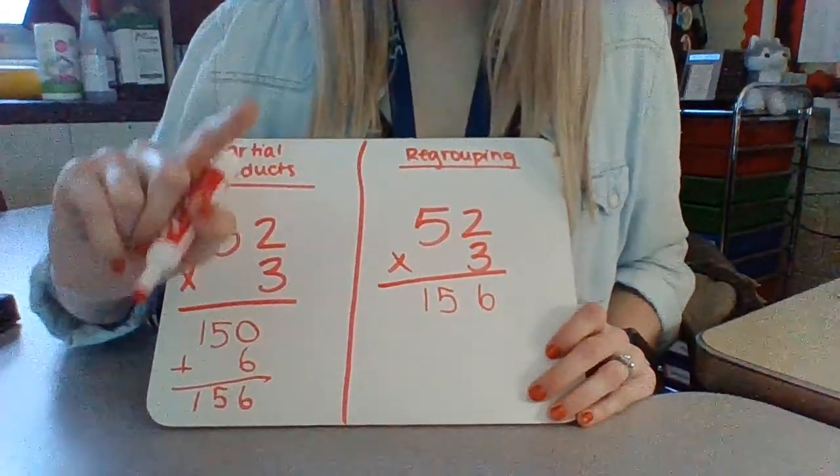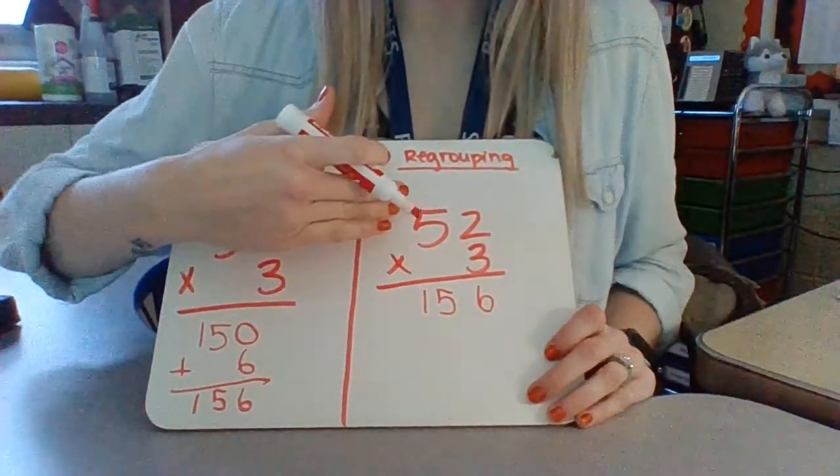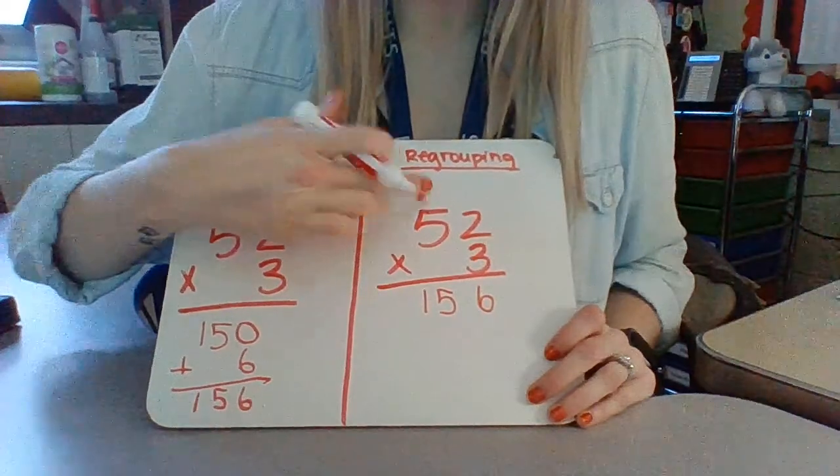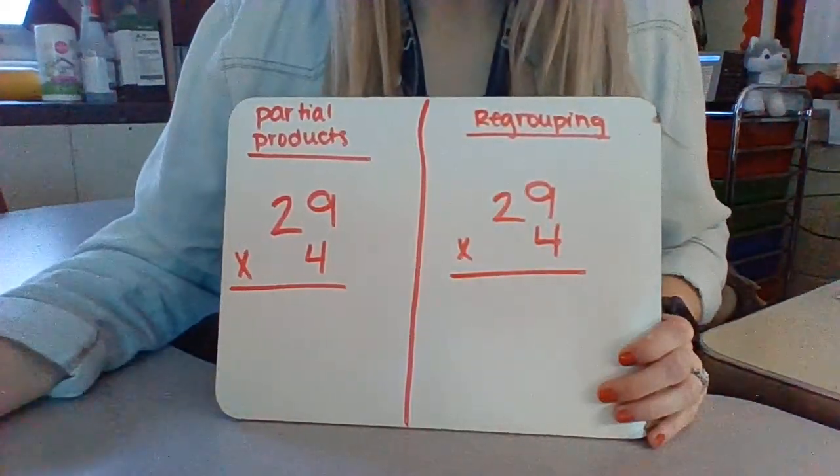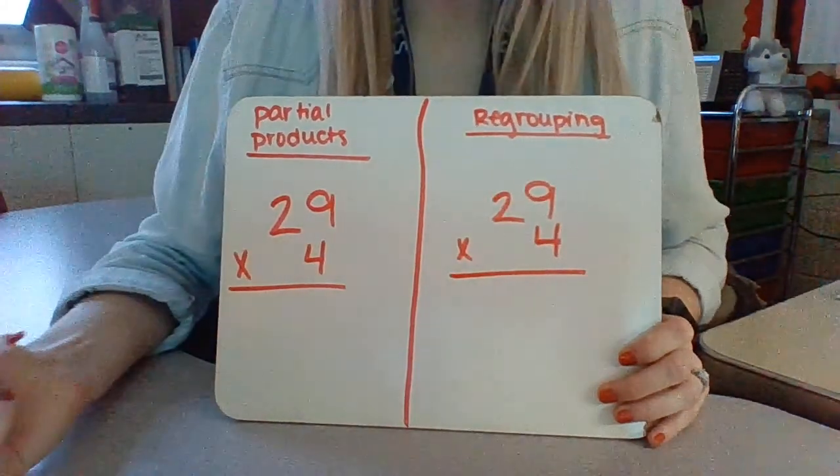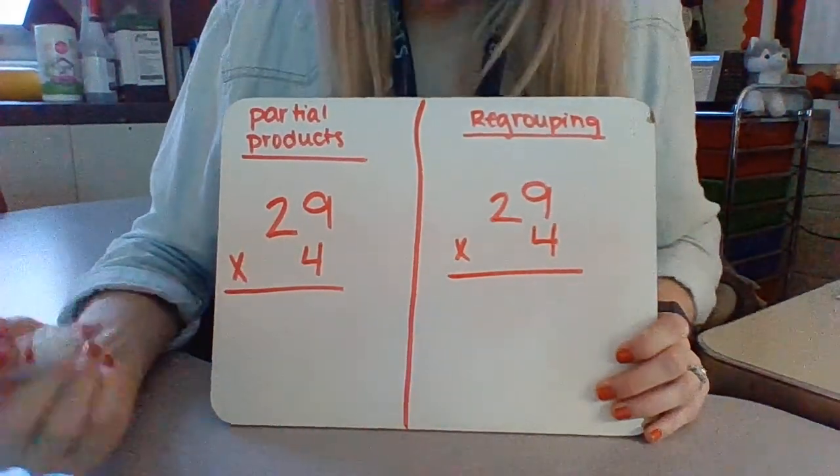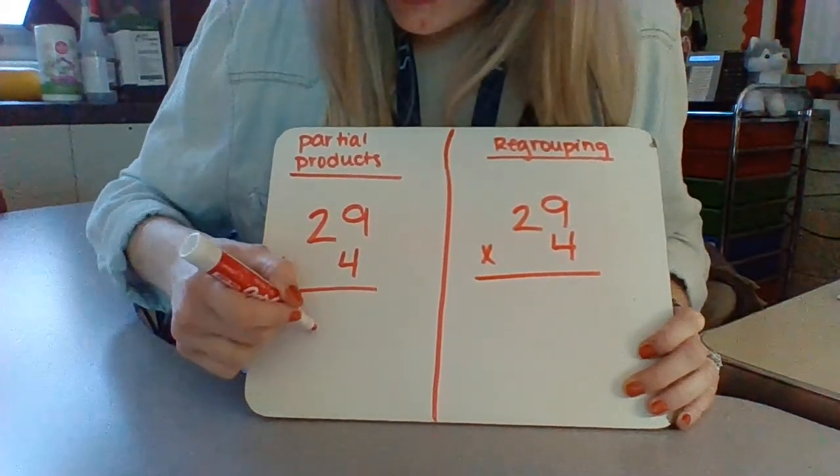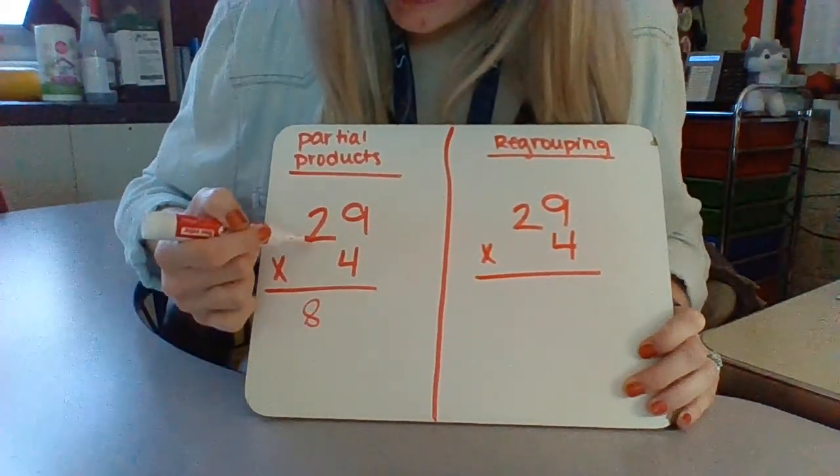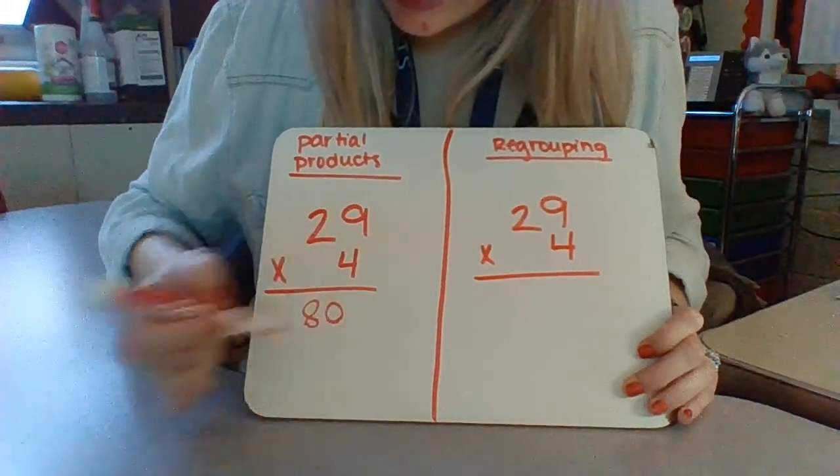I'll do one more problem that way you can see how when we have to carry a number up top, another practice like that. All right, so we're going to do 29 times 4. Starting with partial products: 4 times 2 is 8, and we're in the tens place so we need a 0.